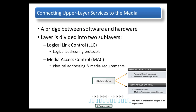The data link layer has the distinction of being the only layer that is implemented both in software and in hardware. Hence, the data link layer is often divided into two sub-layers: the logical link control and the media access control. The upper sub-layer starts the framing process by identifying the network layer protocol of the packet, allowing multiple layer 3 protocols to utilize the same network interface card and media. The lower sub-layer addresses the frame, marks the beginning and end of the frame, and defines the media access method to be used by the physical layer — i.e., hardware.